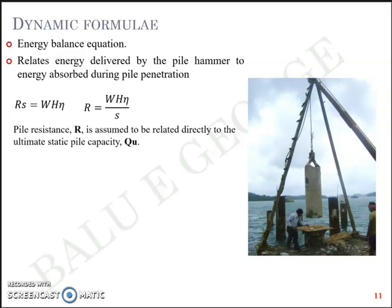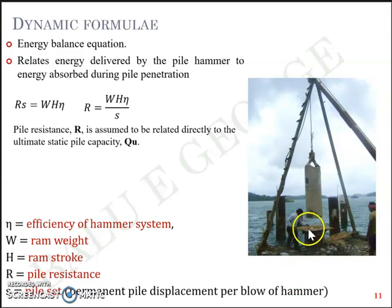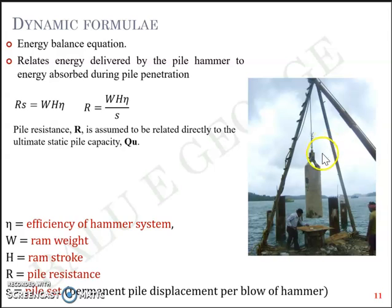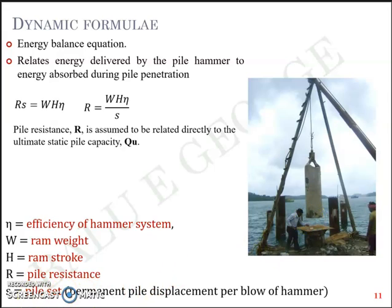Here, η is the efficiency of the hammer system, W is the weight of the ram or hammer, h is the ram stroke or height of drop, and s is the pile set or permanent pile displacement per blow of the hammer. For example, η = 0.6 means 60% energy is transferred. The pile set s could be in the range of millimeters or centimeters.